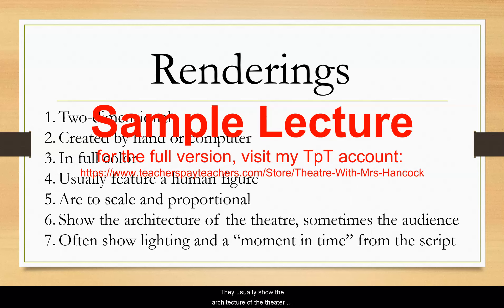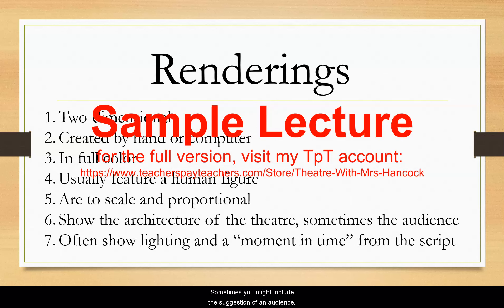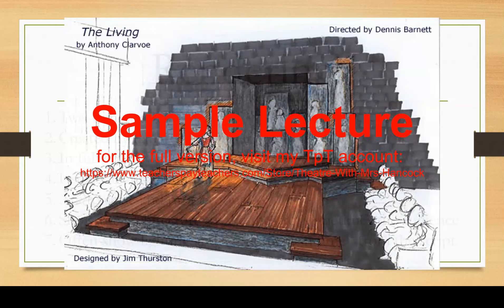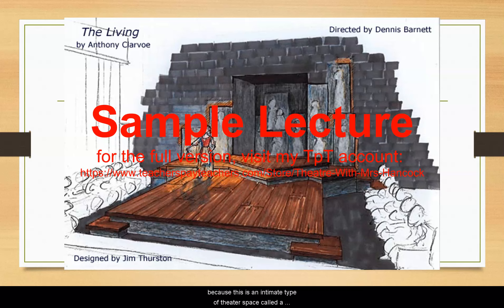Renderings usually show the architecture of the theater, and you can see if it's a proscenium, thrust, arena, etc. Sometimes you might include the suggestion of the audience. In this design for The Living, we can see a suggestion of the audience. The audience is shown because this is an intimate type of theater space called a thrust, where the stage sticks out into the audience.